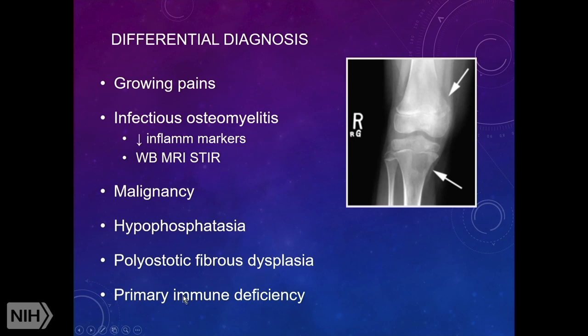Primary immune deficiency is also in the differential. Kids with primary immune deficiency can present with immune dysregulation rather than infections, and we have seen kids with primary immune deficiencies presenting with multifocal bone lesions — for instance, one patient had a RAG deficiency.